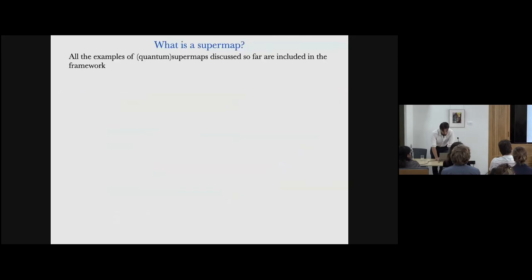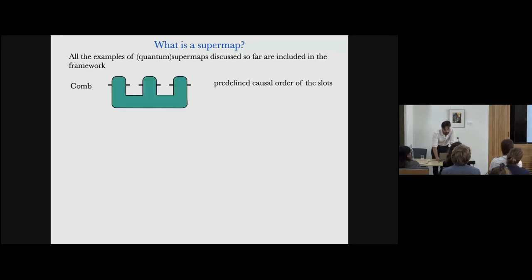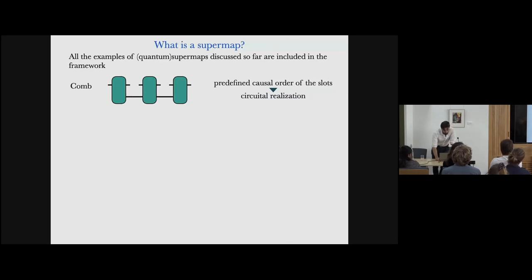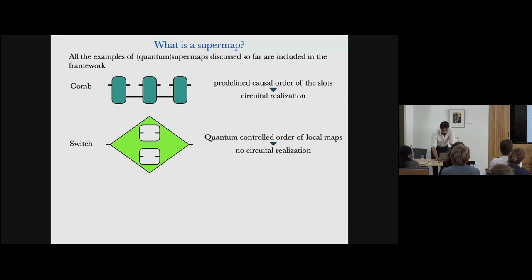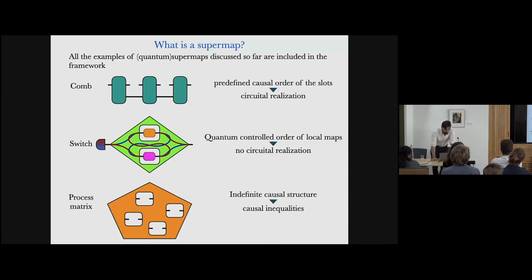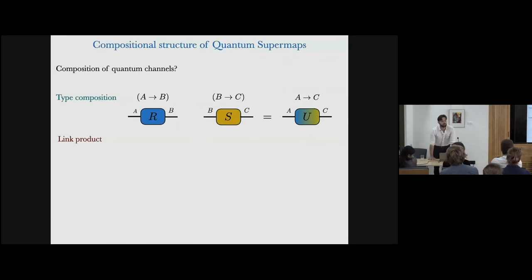In this framework, we can retrieve all the quantum supermaps studied so far, like quantum combs — where there is a predefined sequential order of the slots, allowing a circuit realization. The quantum switch, where there is quantum controlled order of local operations. And the well-known process matrices, where there is, allowing an abuse of language, a deeper quantumness in the causal structure of the map. Now we can go towards the compositional structure of these quantum supermaps.